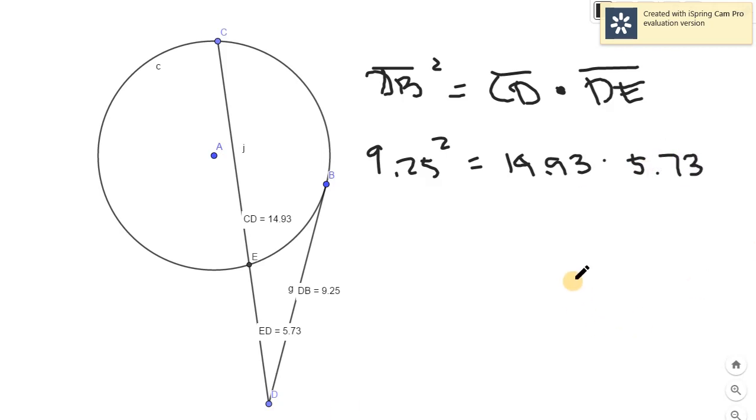Let's try to solve and prove whether we are correct or not. 9.25 squared is 85.56, two decimal places. 14.93 times 5.73 is approximately close, 85.55. The difference of 0.01 hundredths in decimal is negligible, meaning we accept the given, therefore proving that our theorem is correct.